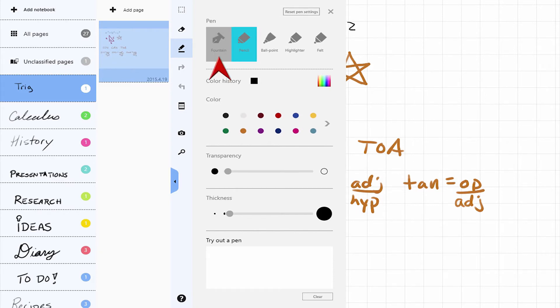Here you can choose the pen type, color, transparency, and thickness. You can select preset colors or even set your own custom color.